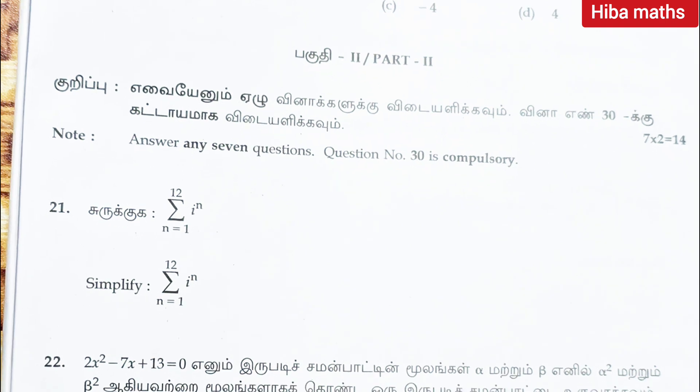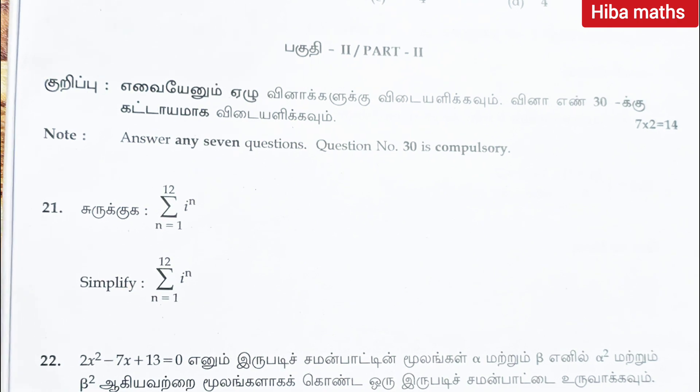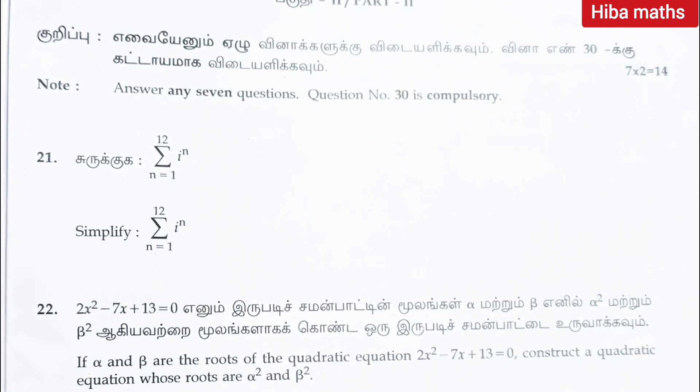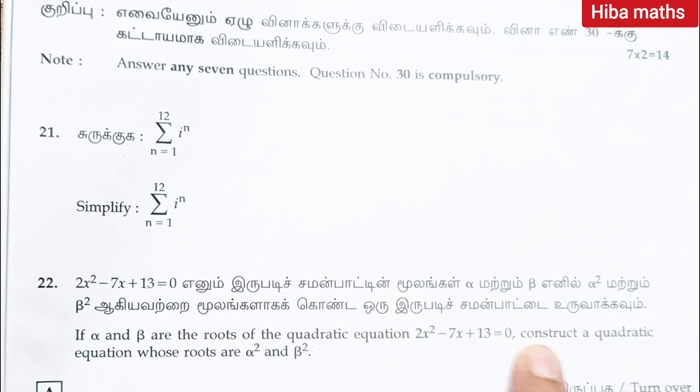Second question: if alpha and beta are the roots of quadratic equation, construct a quadratic equation whose roots are alpha square and beta square.